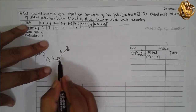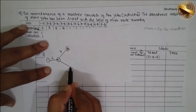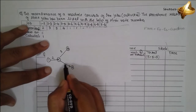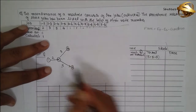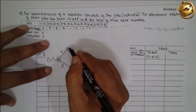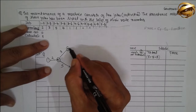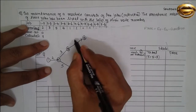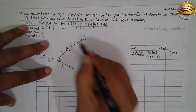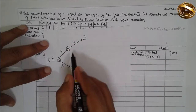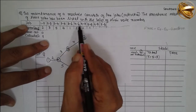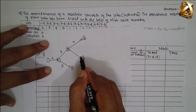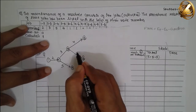Next, 2 to 4; duration is 5. Next is 3 to 5; duration is 4. Then 3 to 6; duration is 1.